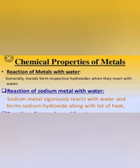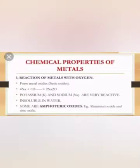Now the next topic is chemical properties of metals. First, metals react with oxygen to form metal oxides. When metals react with oxygen — for example, cast iron — metal oxide is formed, which is what we call rusting. Metals also react with acids to form salts. For example, when sodium reacts with hydrochloric acid (HCl), it forms sodium chloride.